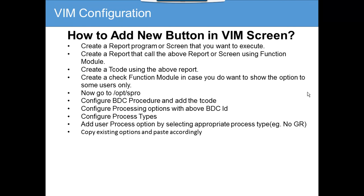Next, we will be configuring processing options with the BDC ID. This is useful where we define what different options you are getting through this BDC ID. Then you configure the processing types and set user process options by selecting the appropriate process type — for example, 'No GR'. The process type, as discussed previously, is the VIM exception. So if there's no GR, someone needs to enter the GR via MB01 or MIGO. Then you copy existing options and paste accordingly.